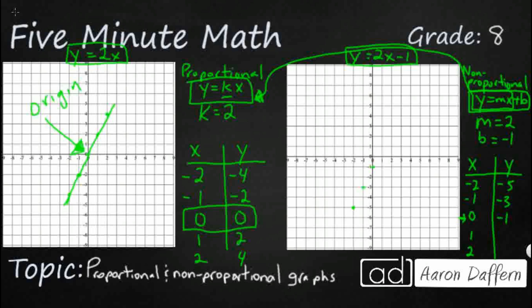Remember, on your proportional relationships, it crosses through the origin, through your 0, 0. But here, it's going to cross the y-axis on your 0, negative 1.